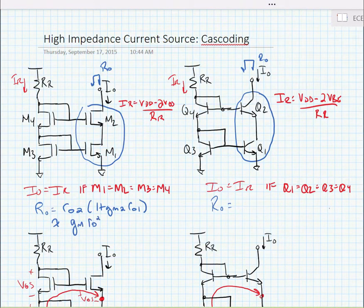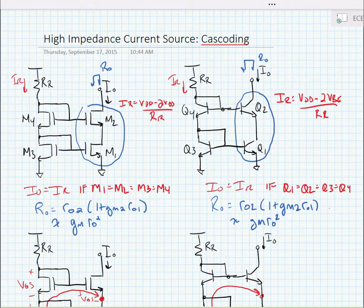We can write a similar expression for the bipolar case. In other words, we can say that the output resistance is approximately the intrinsic gain times the resistance of one of the stages.